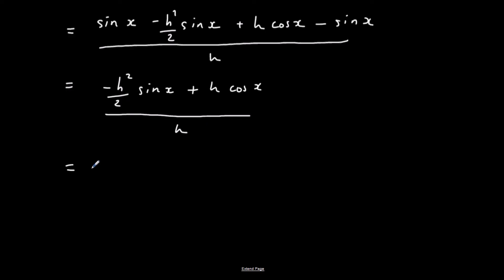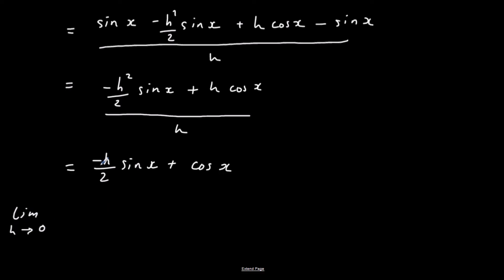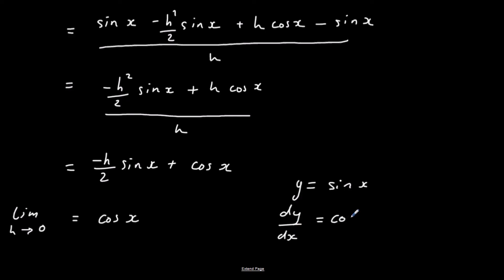Dividing through by h: minus h²/2 · sine(x) divided by h gives minus h/2 · sine(x), and h·cos(x) over h is just cos(x). Now taking the limit as h approaches 0, the term minus h/2 · sine(x) becomes 0, leaving just cos(x). So if y equals sine(x), dy/dx equals cos(x).